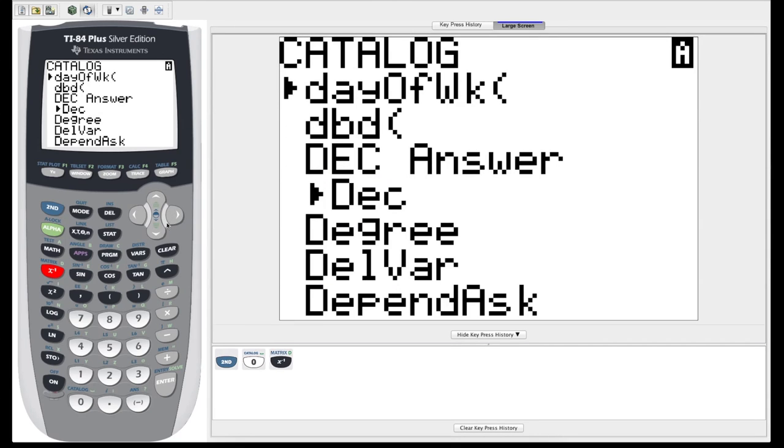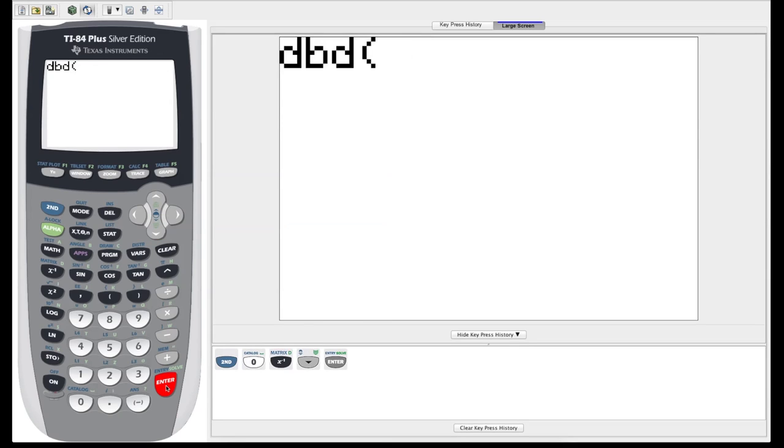What we're looking for is this DBD function. That stands for days between dates. So if we hit enter, what this is going to do when we input the information is it's going to calculate the number of days that have occurred between two dates. It is limited because of the way it is inputted between the years 1950 to the year 2049, but those are most of the dates you'd probably want to know anyway. So the way you enter it is a little odd.